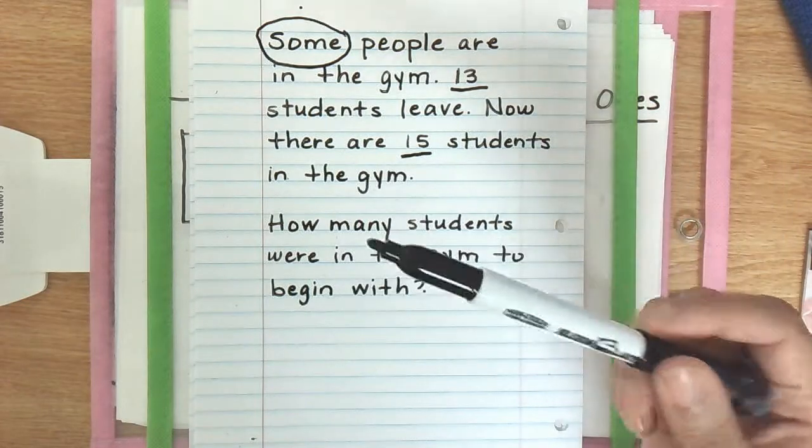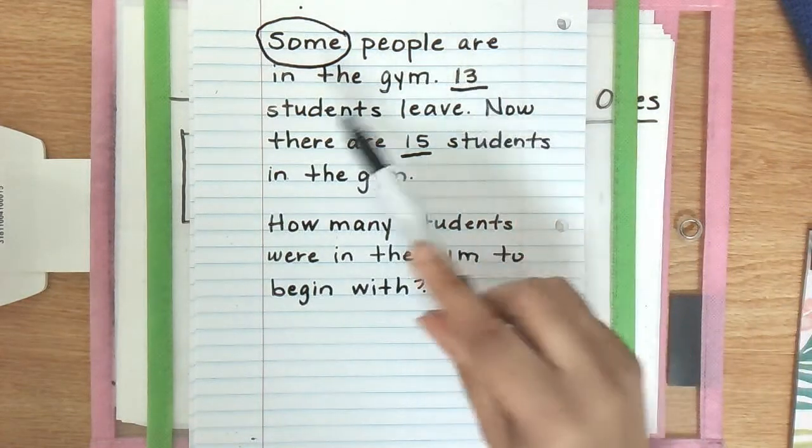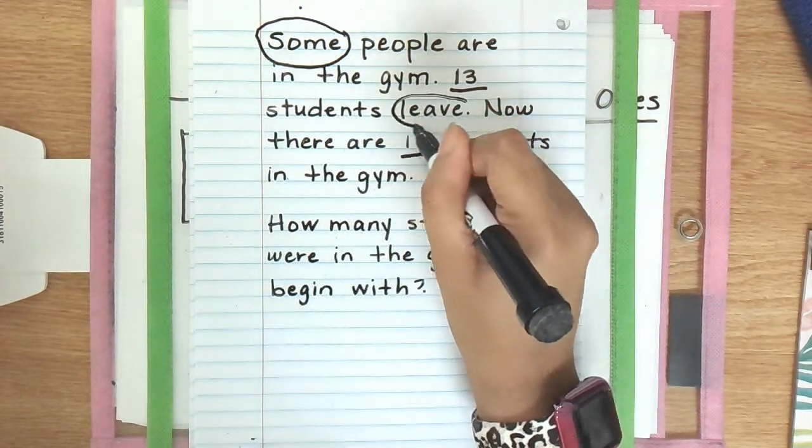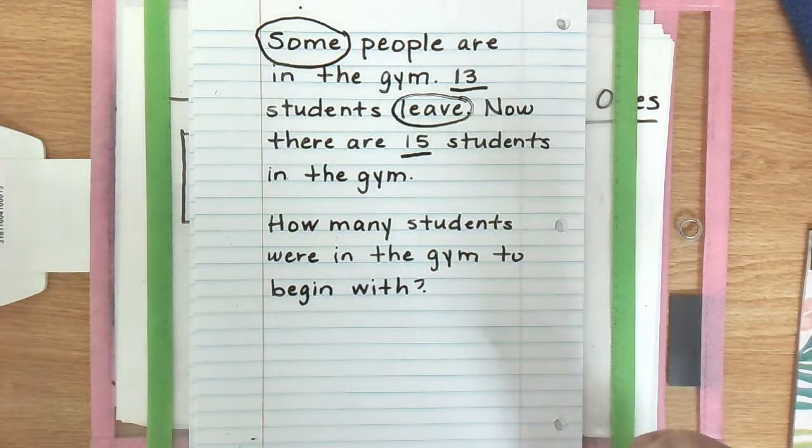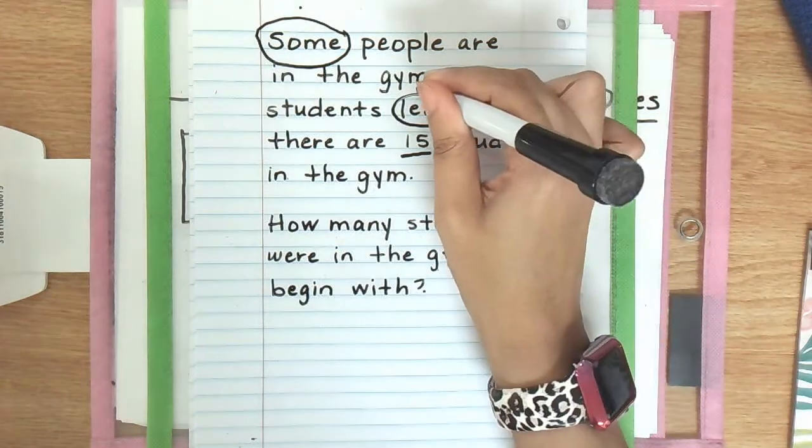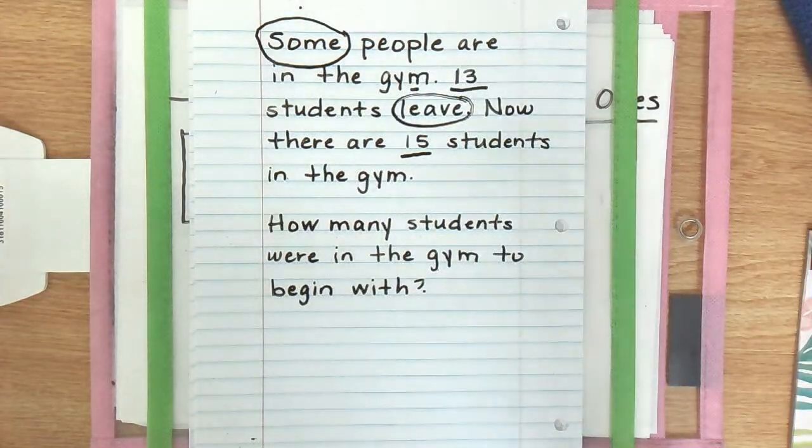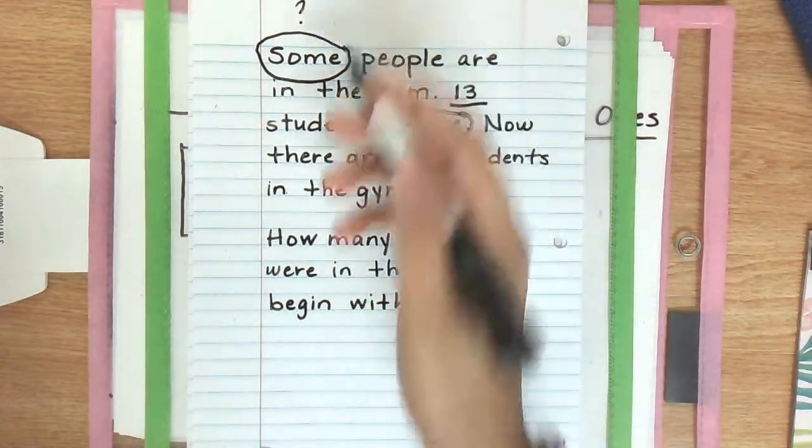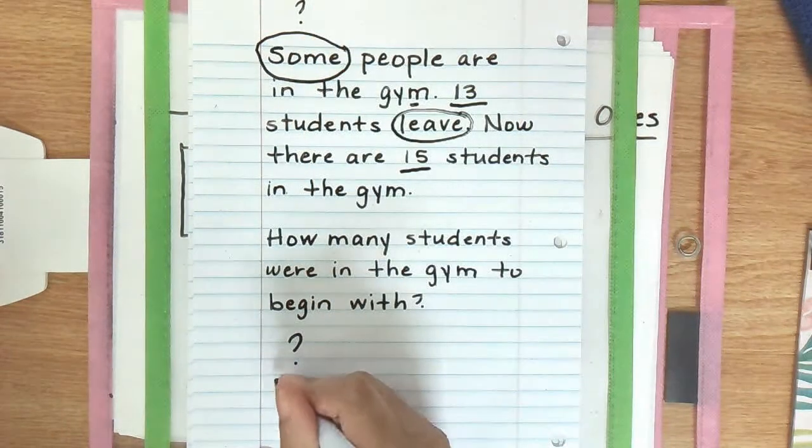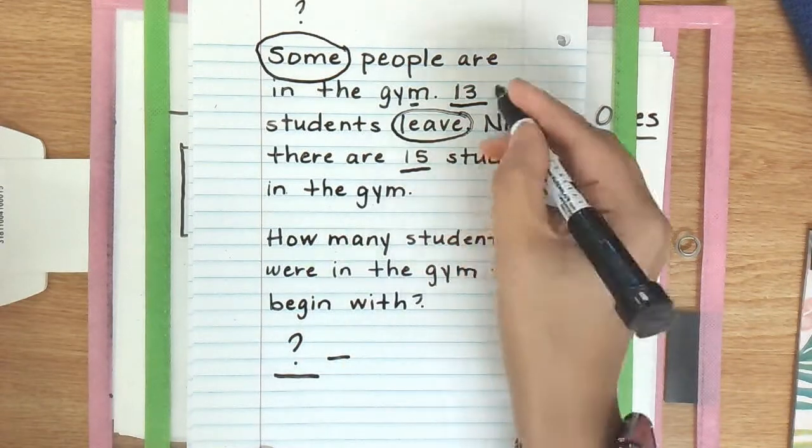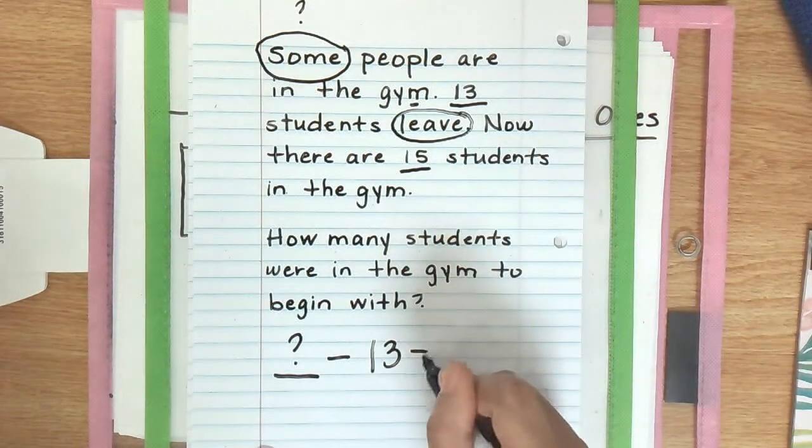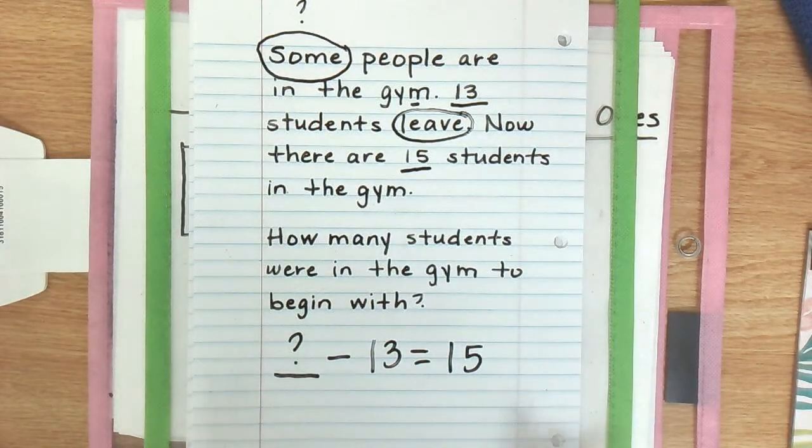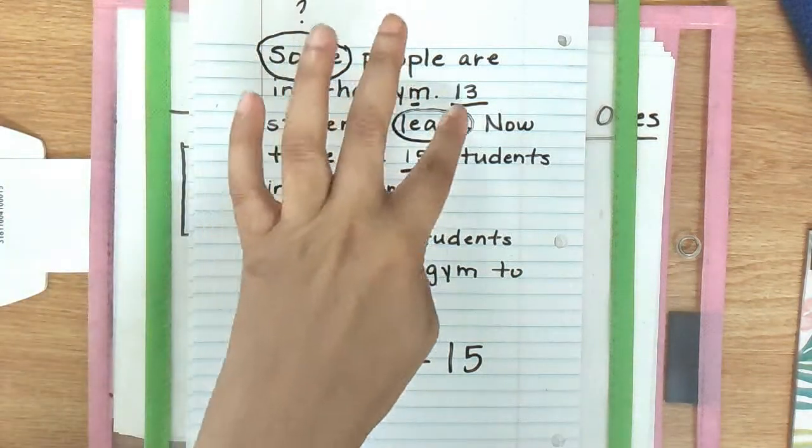I also have students test to see if they can catch any errors that I made. I just made one. 13 students leave. There was an important word we missed in that word problem which was leave. If we know that 13 people are leaving we know that they are no longer there and that would normally let us know that we are doing a subtraction problem. So typically if we were to write out our problem we would have something or some minus 13 is going to give us 15.